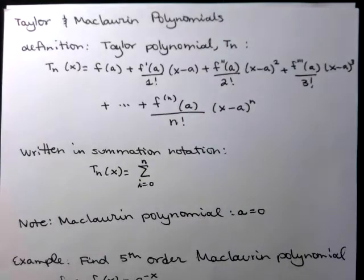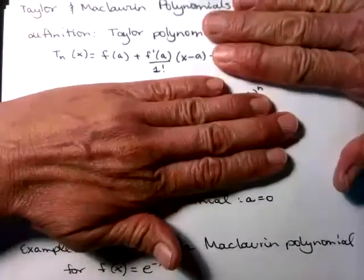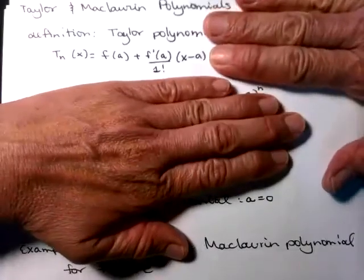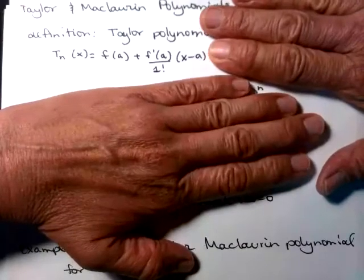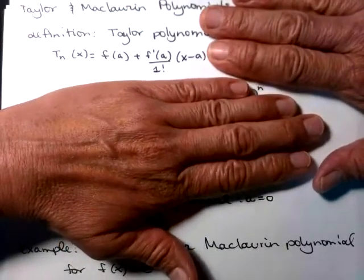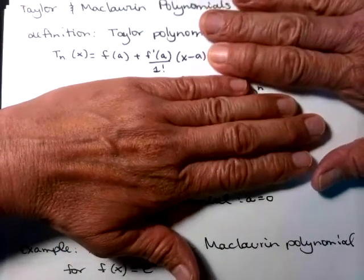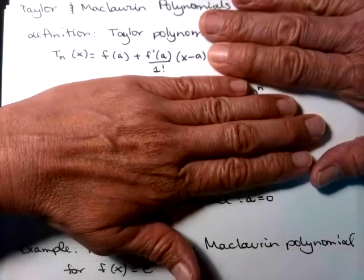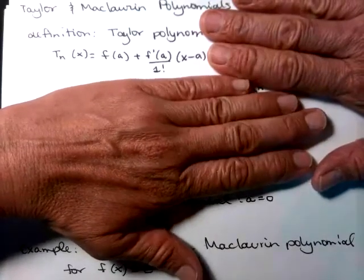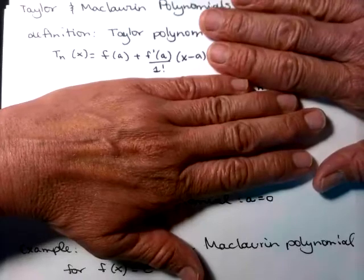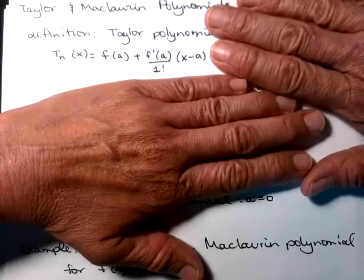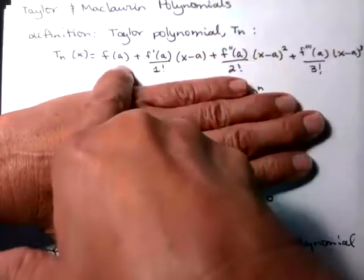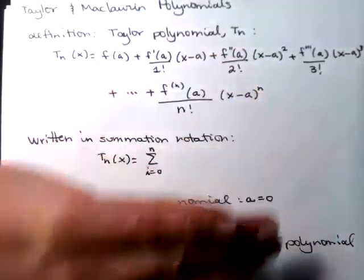A couple of things before I get into this. I want you to notice, if we cover up this, the first order, because I go out to f prime, the single derivative, the first order Taylor polynomial, that is the linearization. That's the equation of the tangent line to a function f at an x value of a.